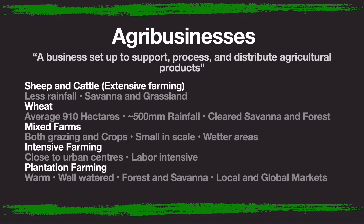Here are some types of agribusinesses. Sheep and cattle, which is extensive farming, requires less rainfall and is found in savannah and grassland areas. Wheat: the average farm is about 910 hectares, you need approximately 500 millimeters of rainfall each year, and it's found in cleared savannah and forest areas. Mixed farms involve both grazing and crops, are usually quite small, and are found in wetter areas. Intensive farming is found close to urban centres and is labour intensive — this covers orchards and plantation farming, found in warm, well-watered areas, sold on local and global markets.